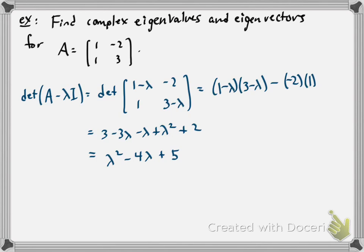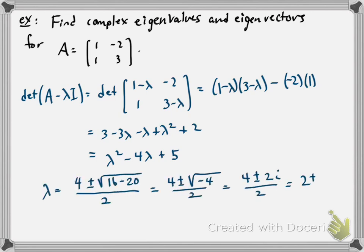So first I just compute the characteristic polynomial. I get λ² - 4λ + 5. And so then I can use the quadratic formula to find the eigenvalues. I see the eigenvalues are 2 ± i.